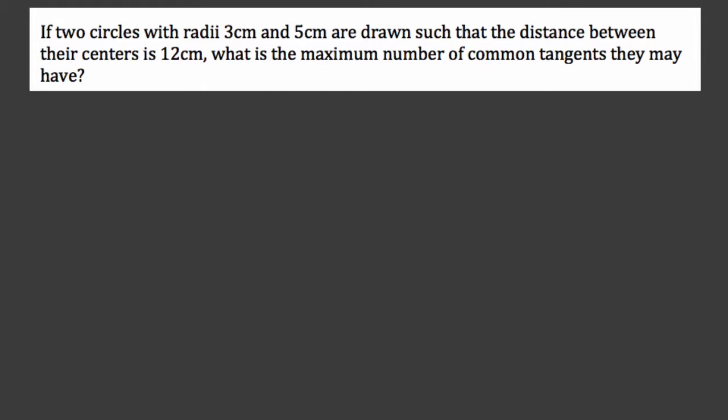A tangent line is not referring to the trigonometric ratio tangent, but a line that meets your circle at exactly one point.